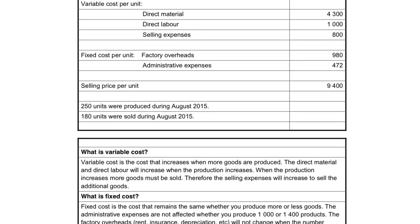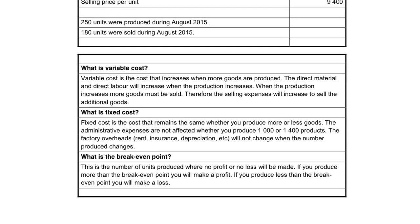If we look at the explanation of the various costs, variable costs are the costs that increase when you make more goods. Direct material and direct labor will increase when the production increases. More goods will be sold, so more selling expenses will be necessary. Fixed cost remains the same — you will have the same cost to pay the rent or the insurance for the factory, the depreciation on the machines, and you will pay the same admin expenses.